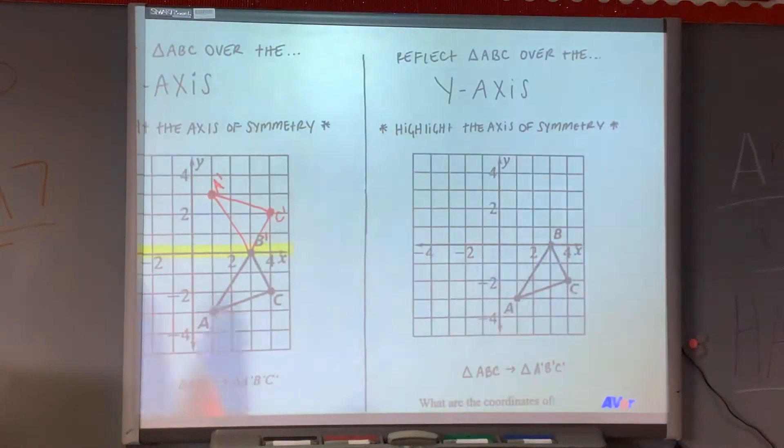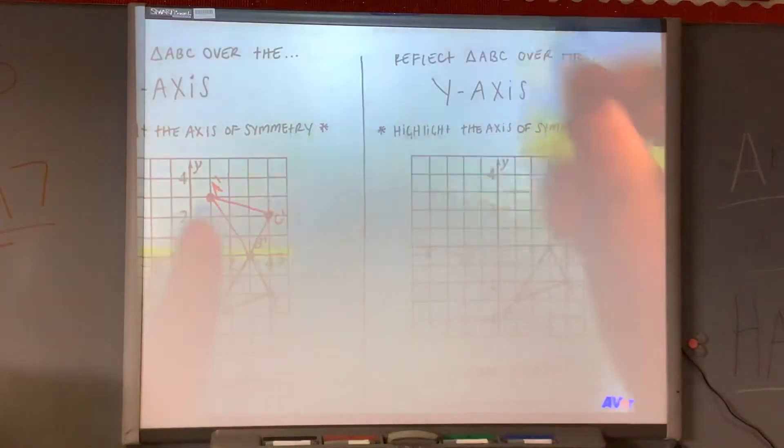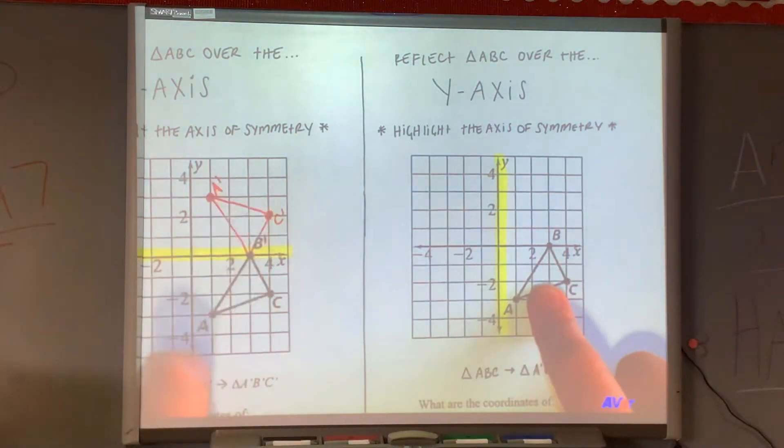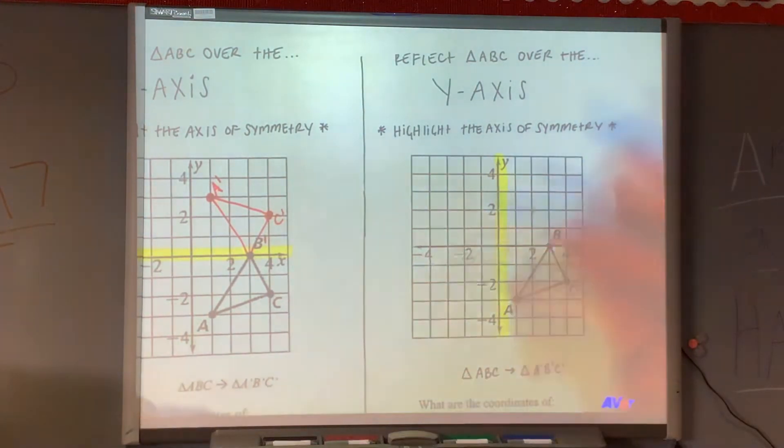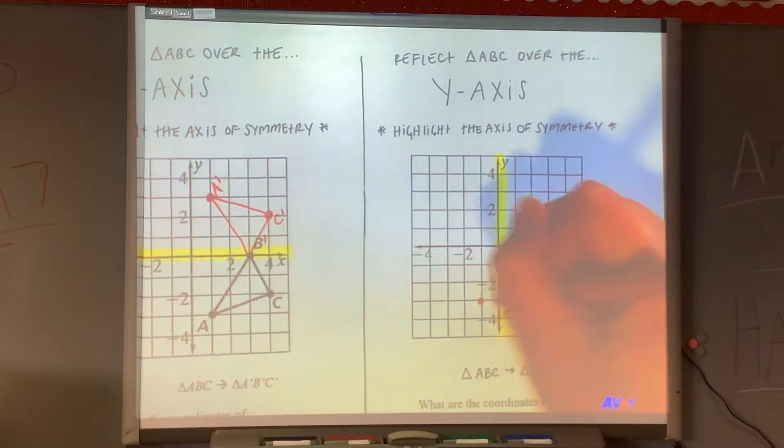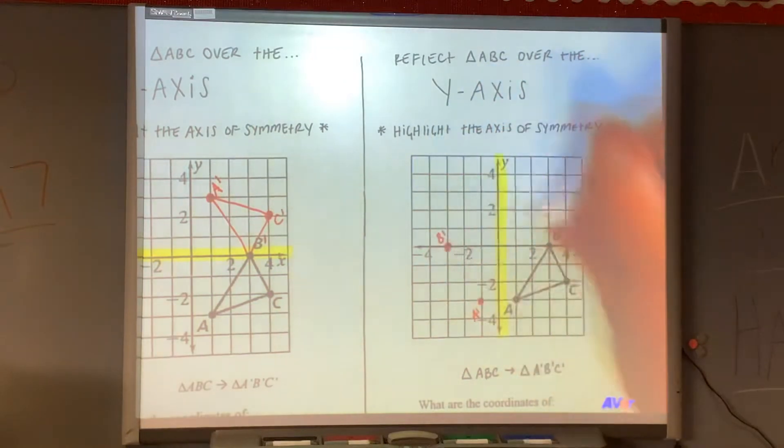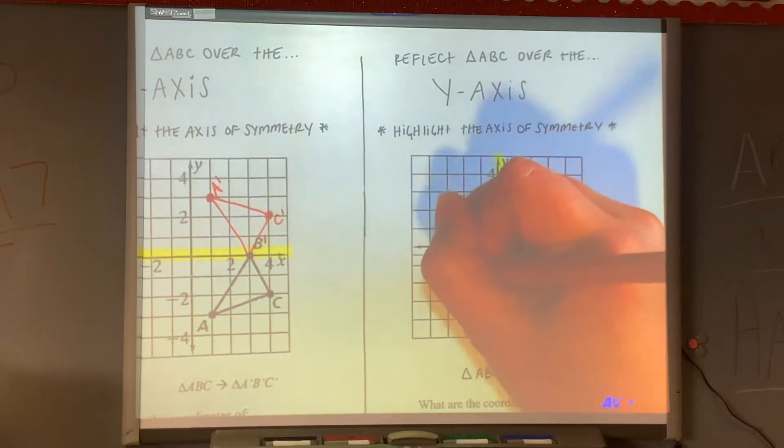This one says we're reflecting over the Y-axis this time. So I'm going to highlight the Y-axis. And then I'm going to try to draw this thing. See, it's the same triangle. It's just going to flip over a different line. This one flipped over the X-axis. This one flips over the Y-axis. I'm going to draw a new line. So A would be over here. Exactly one little box away from the Y-axis. I have to keep the same distances. B would be over here. I'll put B-prime. And then C looks like it will be over here. And, of course, connect my dots.